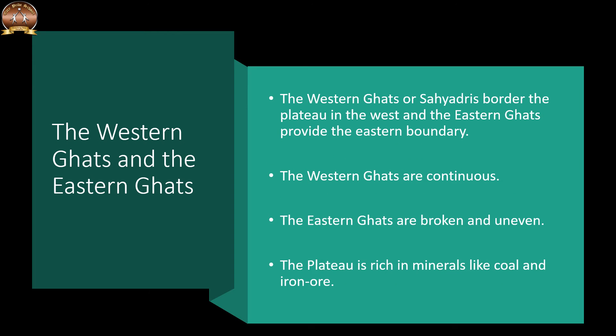The Western Ghats, also known as the Sahyadris, border the plateau in the west, while the Eastern Ghats provide the eastern boundary. The Western Ghats are almost continuous, but the Eastern Ghats are broken and uneven. The plateau is rich in minerals like coal and iron ore.